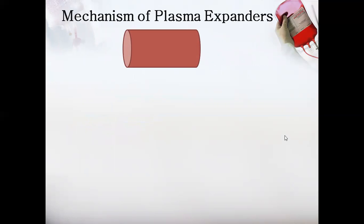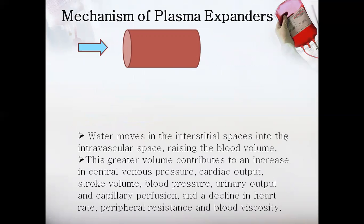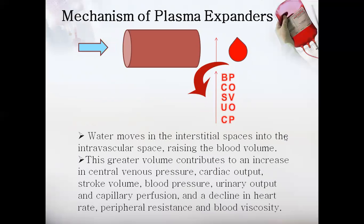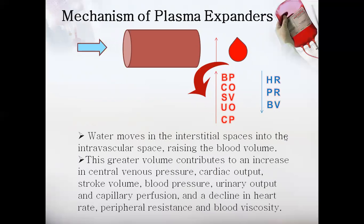The basic mechanism of plasma expanders is that when administered, they enter the interstitial spaces and cause an increase in blood volume. After raising blood volume, certain factors increase — blood pressure, cardiac output, stroke volume, urinary output, and capillary perfusion — while other factors decrease, including heart rate, peripheral resistance, and blood viscosity.